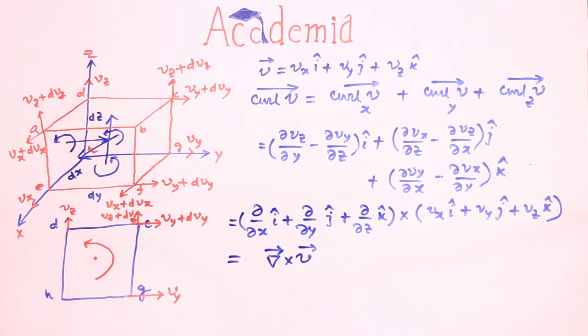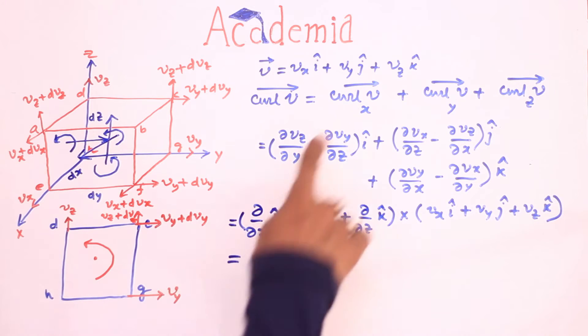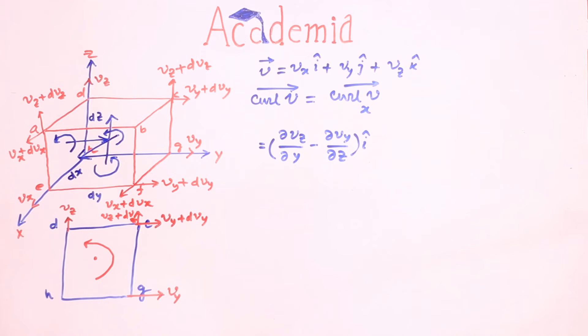For example, when we have calculated curl of V along x direction, we have taken this closed contour CdHg with sides of lengths dy and dz into account and the curl of V resulted in this expression.